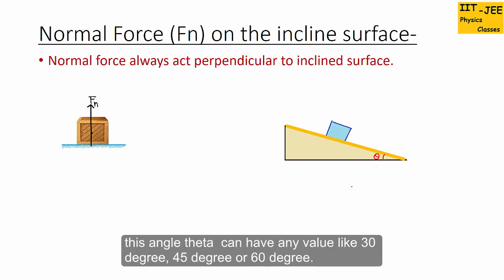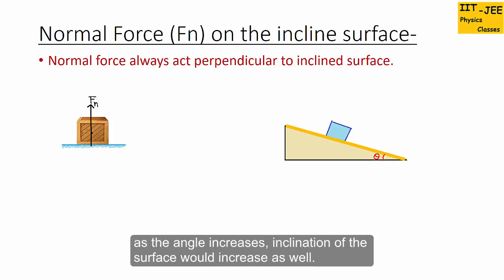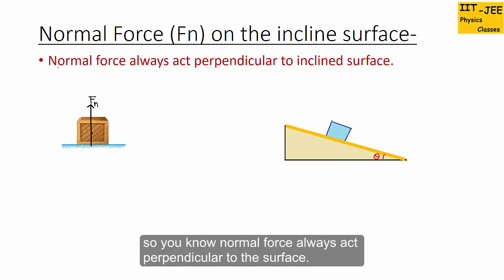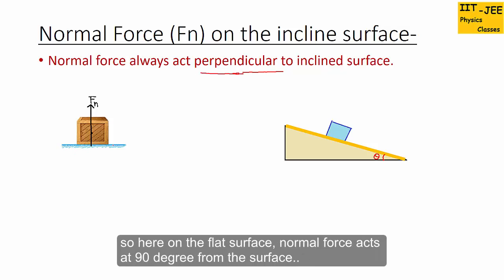Theta can have any value like 30 degrees, 45 degrees, or 60 degrees. As the angle increases, the inclination of the surface increases as well. Suppose this is the box which is kept on this inclined surface. You know, normal force always acts perpendicular to the surface.